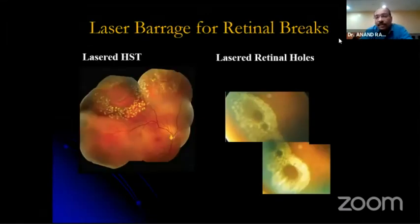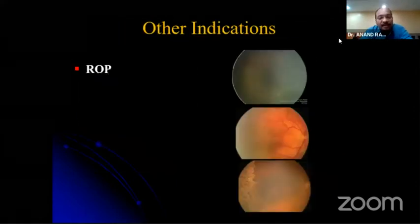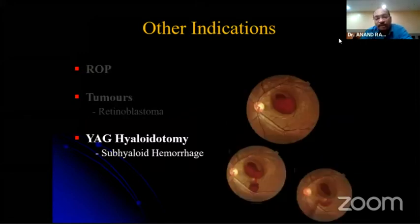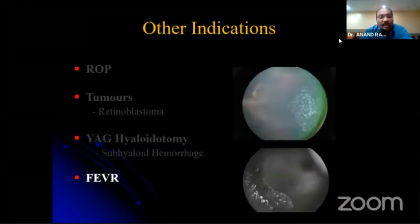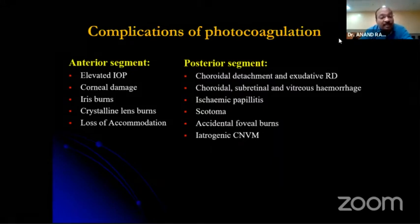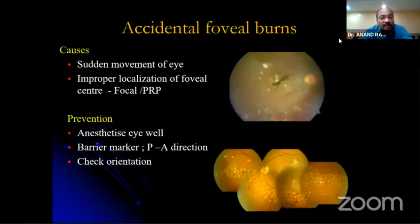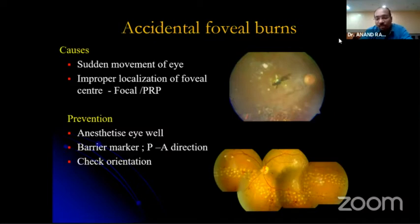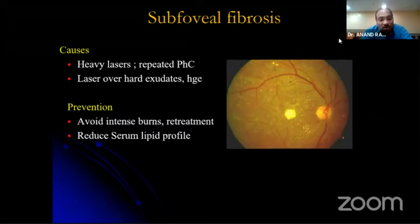Critical uses of lasers include barrage for retinal breaks — horseshoe tears and retinal holes — retinopathy of prematurity, laser to peripheral ischemic zones, tumor ablation for retinoblastoma, evacuation of premacular sub-hyaloid hemorrhage, febrile exudative vitreoretinopathy, and various other indications. The perils of laser: anterior segment complications include elevated IOP, corneal damage, iris and lens burns, and loss of accommodation. In the posterior segment, accidental laser to the fovea can happen with a sudden eye movement during focal or PRP, so you need to anesthetize the eye well and use a barrier marker, going posterior to anterior.